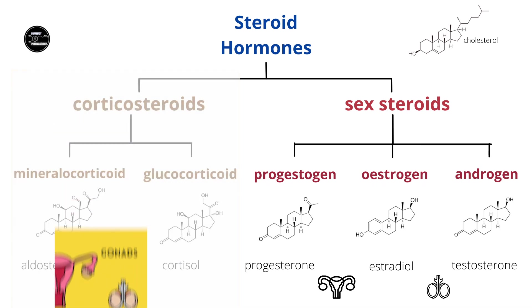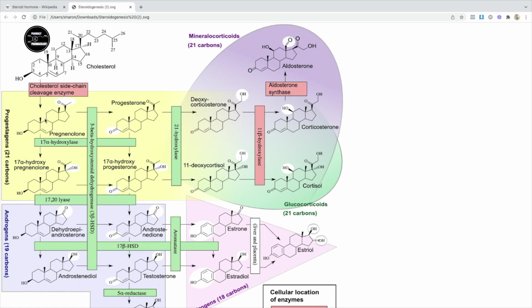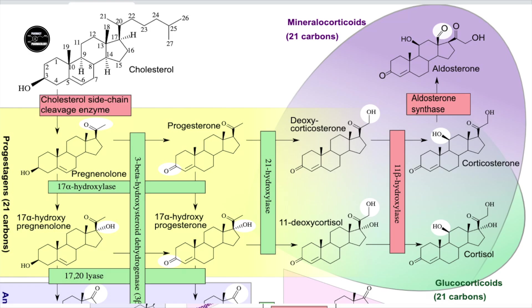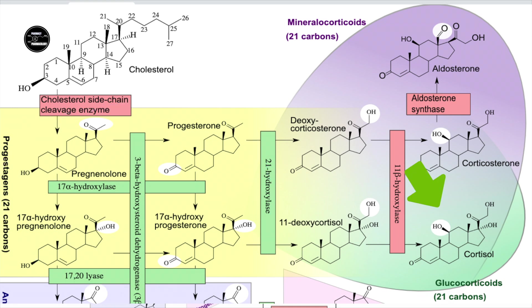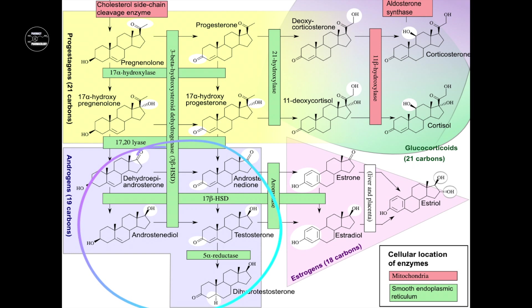If you go to Wikipedia and look up steroid hormones, you can find this image showing the pathways of synthesis of the different steroid hormones, starting from the mother compound cholesterol. This shows that cholesterol has to be converted into a progestogen first before being converted into the final compound — either a glucocorticoid or a mineralocorticoid. And to make the rest of the sex steroids, it again has to go through a progestogen first before being converted into an androgen, and then finally into one of the estrogens.